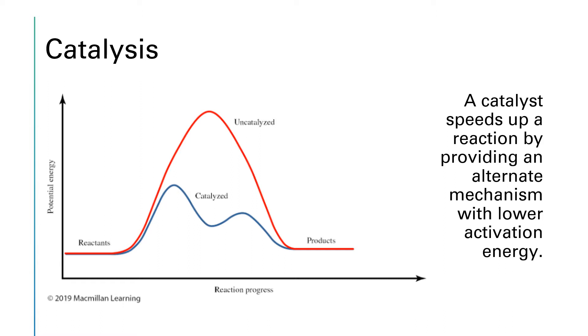Notice that the catalyst does not affect the delta H of the reaction. The reactants and the products are still at the same energy levels as they were in the uncatalyzed reaction, so the overall delta H remains the same.